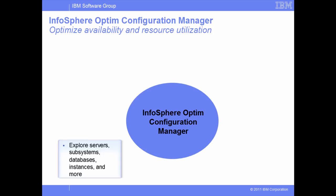Explore DB2 information for databases and clients that are registered with Infosphere Optim Configuration Manager. For example, you can explore the versions of the databases, the properties of the servers that host the databases, such as data sharing groups, subsystems, and information about the client on which a particular application runs.